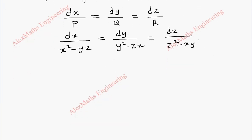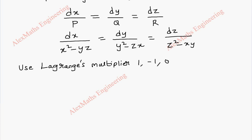Now we are going to use Lagrange's multiplier method, and two multipliers we are going to use. The first multiplier is (1, -1, 0) and another multiplier is (0, 1, -1).